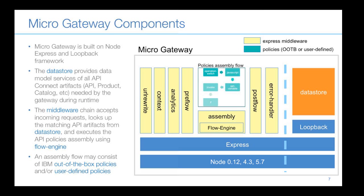Libra described the policy assembly flow: each box in the diagram represents a policy, which can be an out-of-the-box IBM policy like 'invoke' or 'set variable', or a user-defined policy. Tim clarified that user-defined policies are being provided in this release, but as a beta feature. Libra noted this chart gives a good idea of the components available on the Micro Gateway.